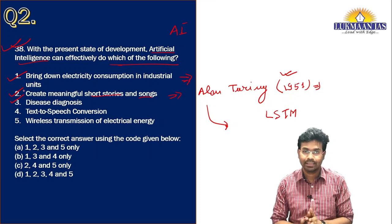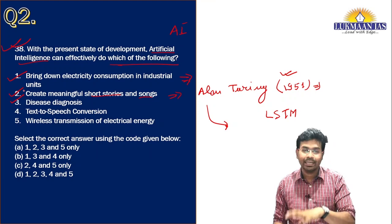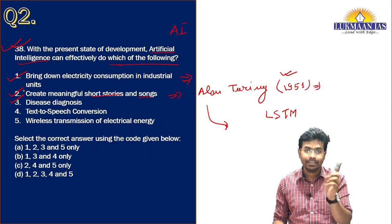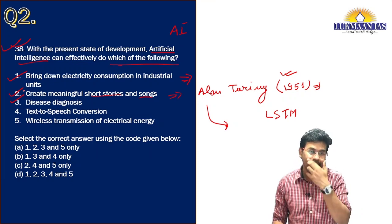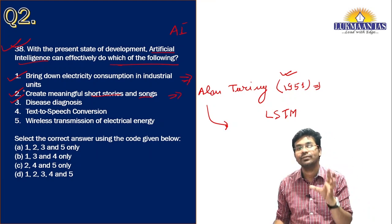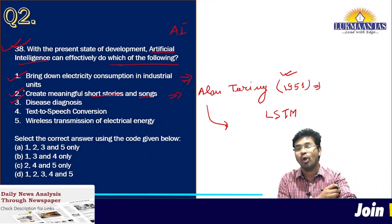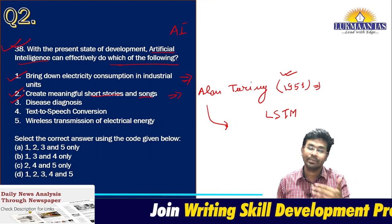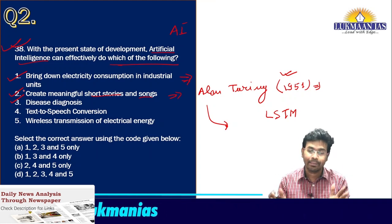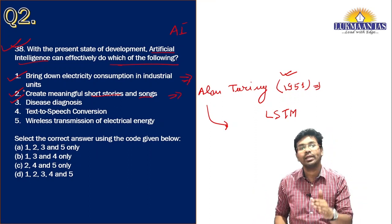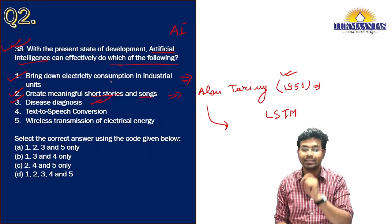If we talk about disease diagnosis, diseases are normally diagnosed by health professionals — doctors. But disease diagnosis can also happen using artificial intelligence. Research has found that disease diagnosis using AI was more accurate over a long-term period. Although health professionals are the backbone of the health sector, both can be integrated for greater healthcare facilities.